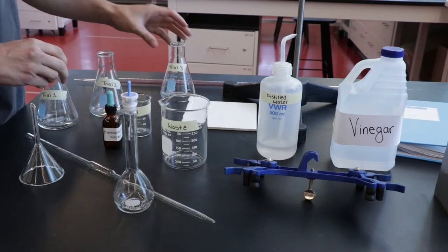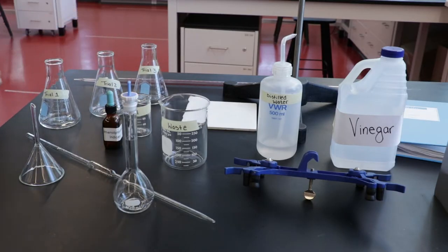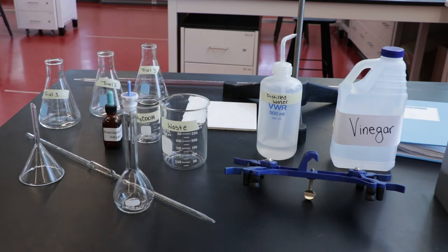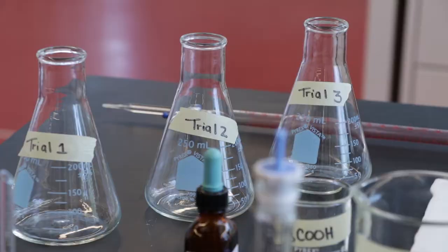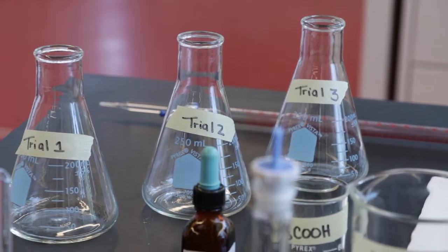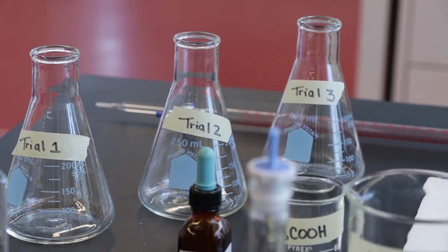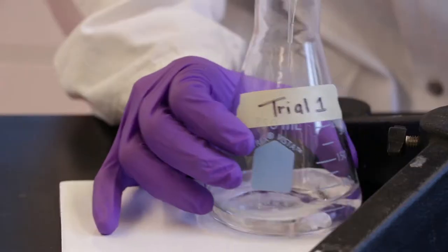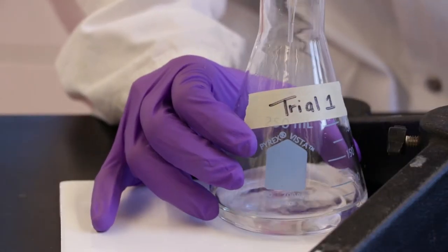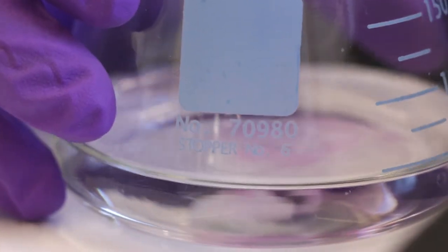The purpose of this lab is to determine the concentration of acetic acid in a brand of vinegar by titrating it with sodium hydroxide. This will be done by adding a known amount of standardized sodium hydroxide solution to the vinegar to cause a color change in the indicator. The color change indicates that the endpoint of the titration has been reached.